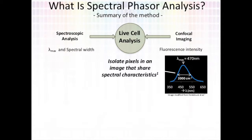So what is spectral phasor analysis? Spectral phasor analysis is a live cell analysis technique. It combines confocal imaging, which collects fluorescence intensity data, with spectroscopic analysis, which measures spectral data like lambda max and spectral width. From the diagram we can see that lambda max is the wavelength at which the spectrum hits maximum fluorescence intensity. We can also see the average spectral width, which is marked across the wavelength, and fluorescence intensity is marked on the y-axis. So effectively, spectral phasor analysis allows us to isolate pixels in an image that share spectral characteristics.